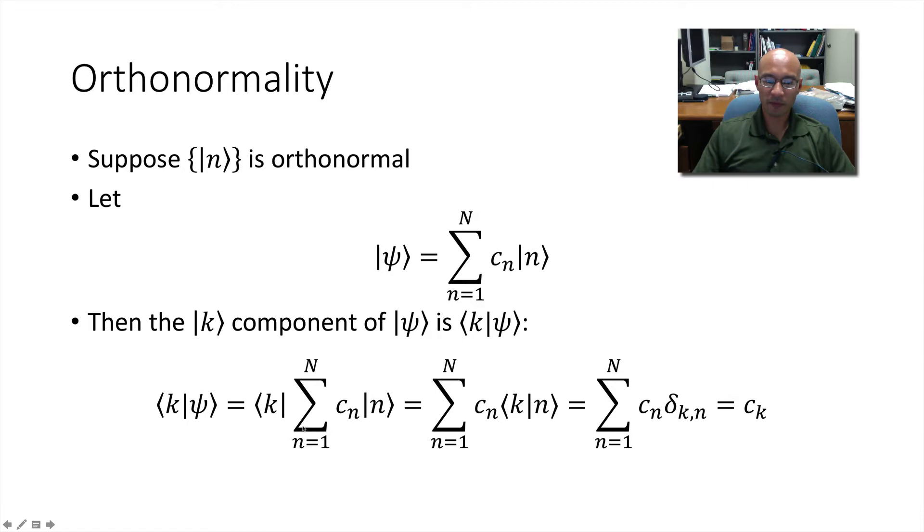So we left multiply the bra onto the summation form of psi. And I noted earlier that scalar multiplication commutes. So we can take the k, because it's n independent, we can bring it inside of the summation, and we can swap it with the c sub n, and we get this bracket. Well, that bracket happens to be interchangeable with the Kronecker delta. And we know that the Kronecker delta is zero when k is not equal to n. So everything drops out when k is not equal to n, and we're left with a single c sub k. So that gets us the component of psi in k, or the kth component of psi.